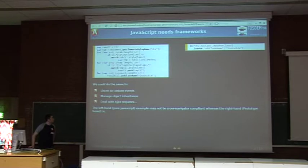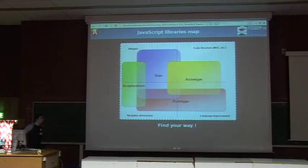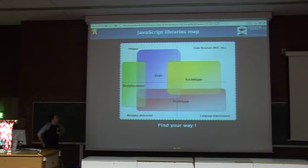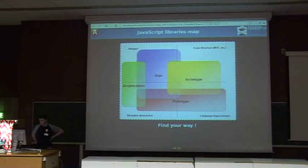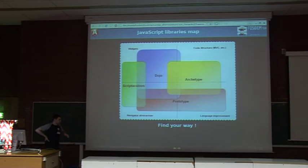We can do this with a lot of examples. They are all very complicated with raw JavaScript. On this diagram you can see exactly why. Prototype improves the language and improves the navigator abstraction — that's almost everything it does, and it's quite perfect.